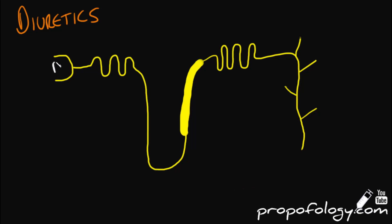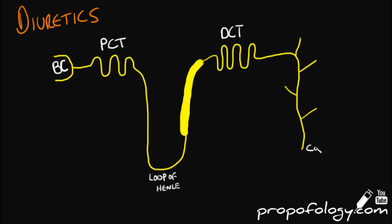We're going to look at where different diuretic drugs act on the nephron to exert their effects. Let's label this nephron with its basic structures: the Bowman's capsule, the proximal convoluted tubule, the loop of Henle, the distal convoluted tubule, and the collecting ducts. Let's also label the water-impermeable thick limb and the water-permeable thin limb of the loop of Henle.